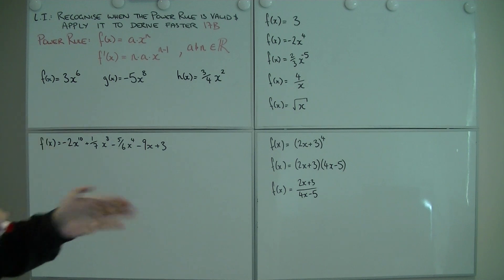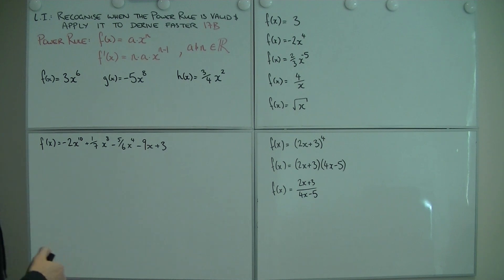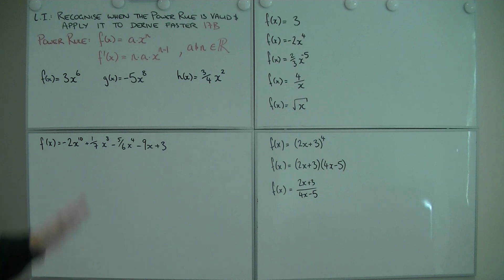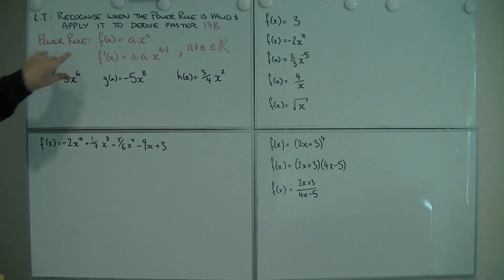Every time you take a shortcut, there's got to be something you're watching out for, otherwise it wouldn't be called a shortcut. So first of all, we're going to use the power rule blindly, and then we're going to run through when it won't work. So first things first, what is the power rule?